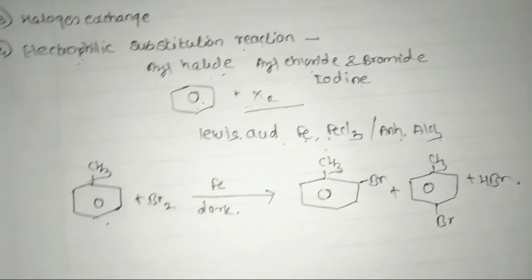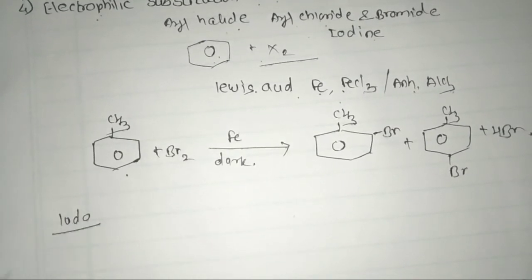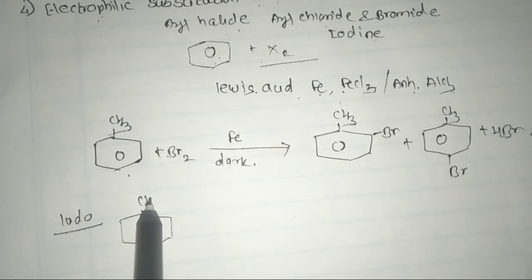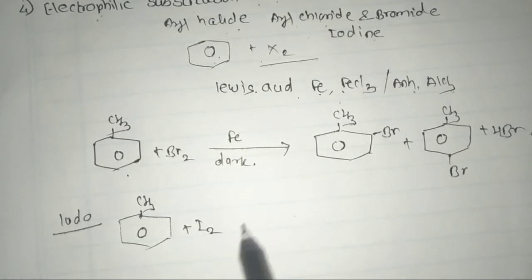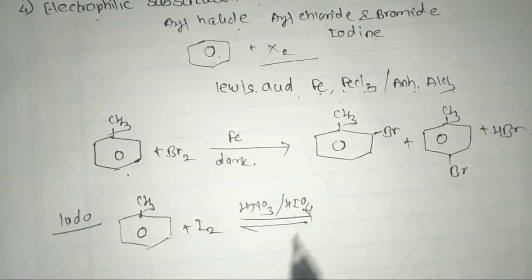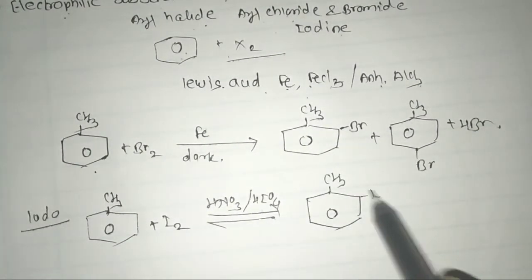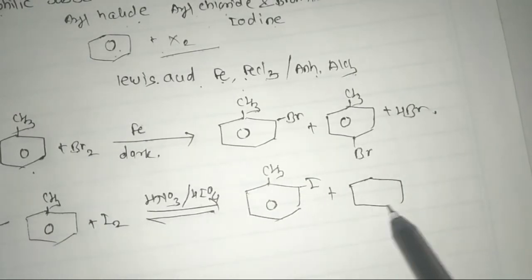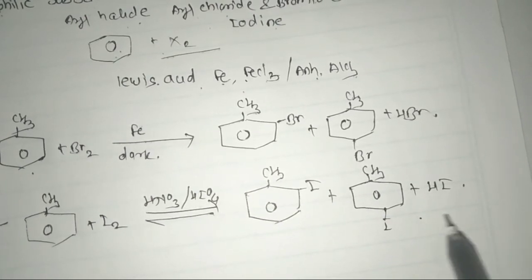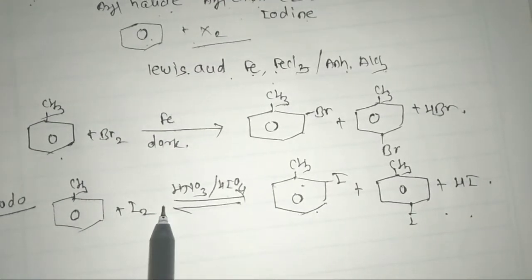This electrophilic substitution reaction is also used for the formation of iodo compounds. For example, toluene reacts with iodine in the presence of an oxidizing agent such as HNO₃ or HIO₄ to give ortho-iodotoluene and para-iodotoluene.